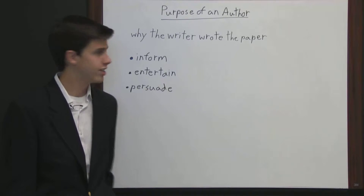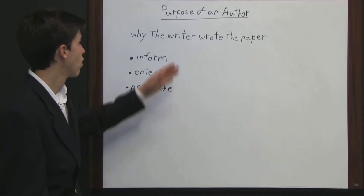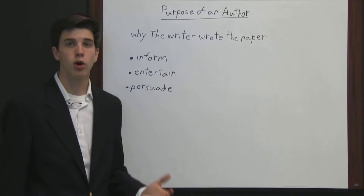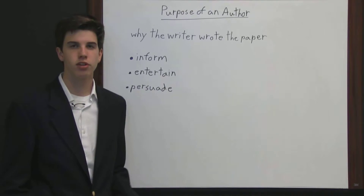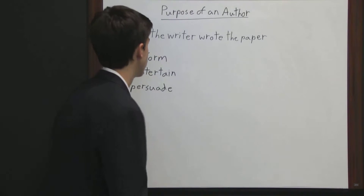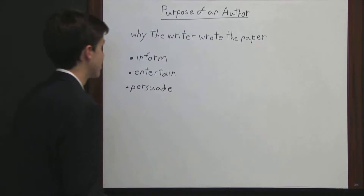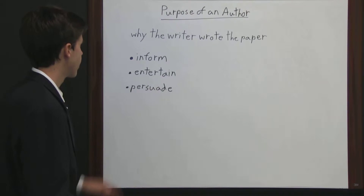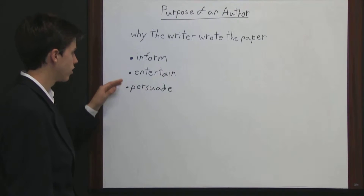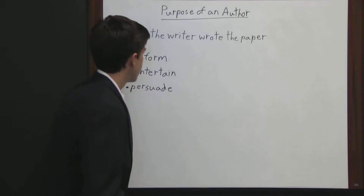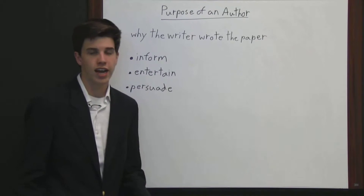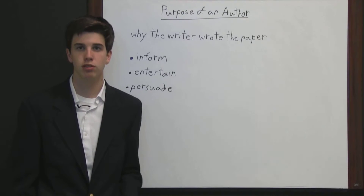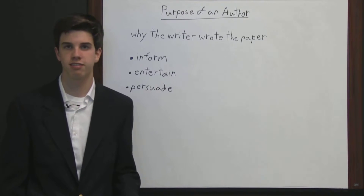The purpose of an author is basically why the writer wrote the paper — what motivated them to write something. There are three basic types of motivations or purposes of an author: to inform, entertain, or persuade. It's important as a reader to understand the purpose of the author because it helps you better understand the text.